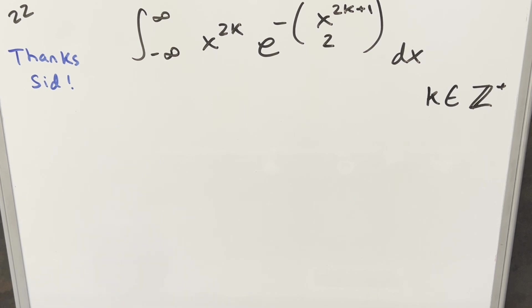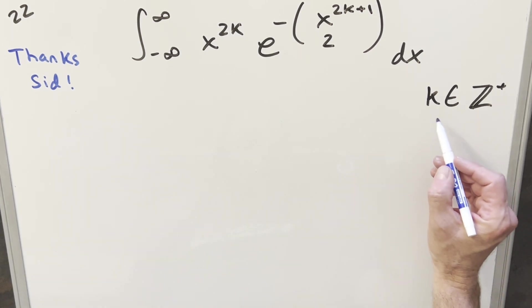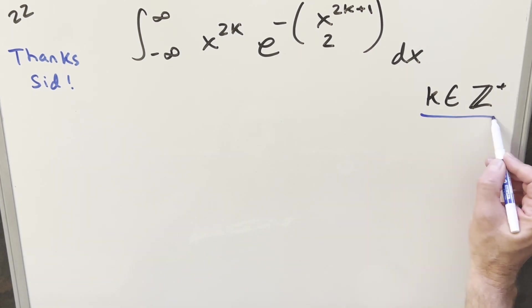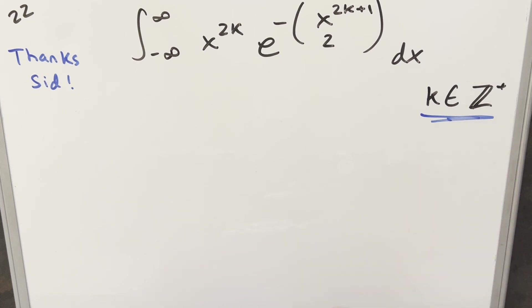Okay, we have a good one here today. This one was sent to me by Sid. We have the integral from minus infinity to infinity of x to the 2k, e to the minus the binomial coefficient of x to the 2k plus 1 over 2, dx. We just have this condition to the right that k is going to be a member of the positive integers.